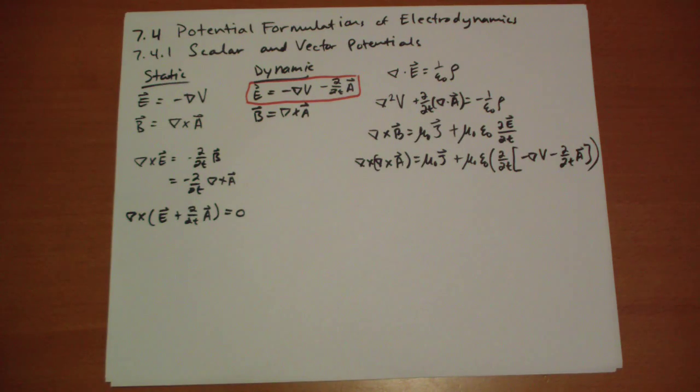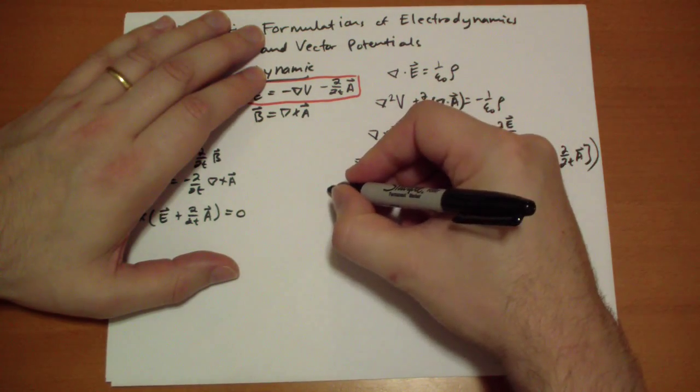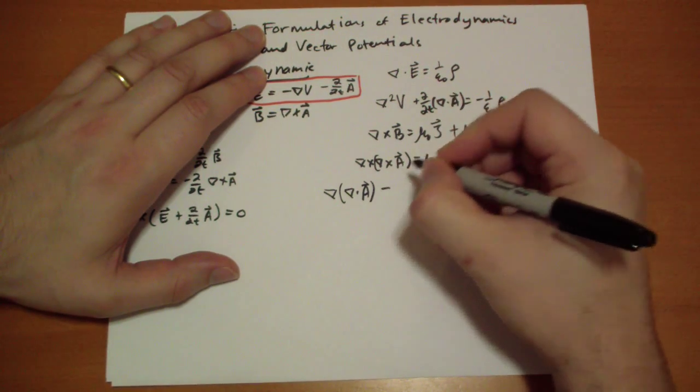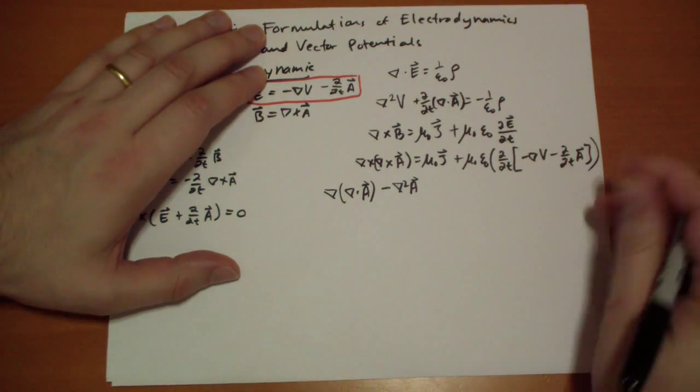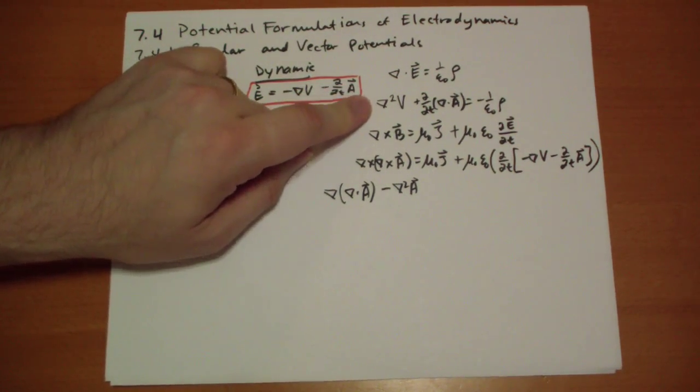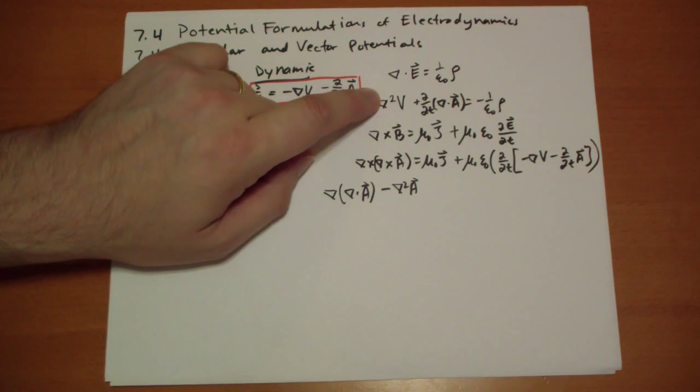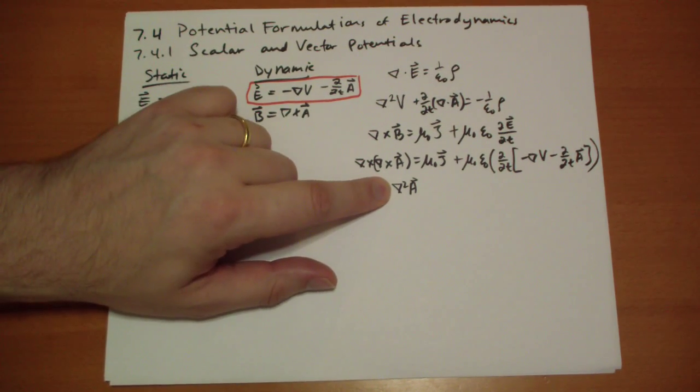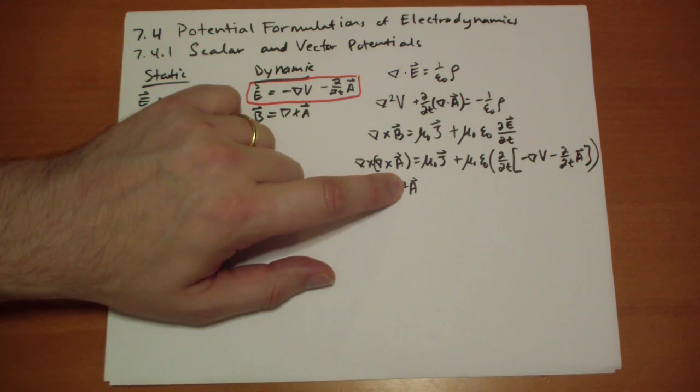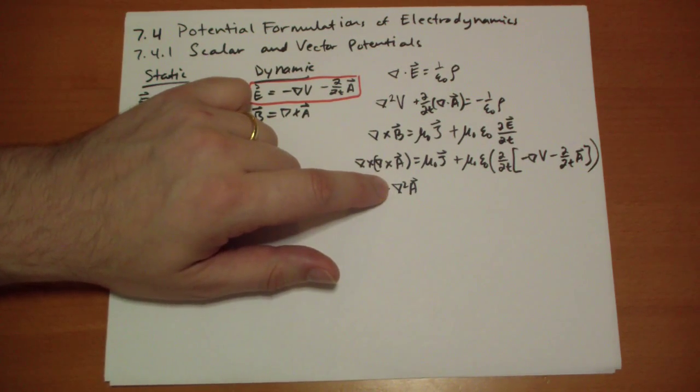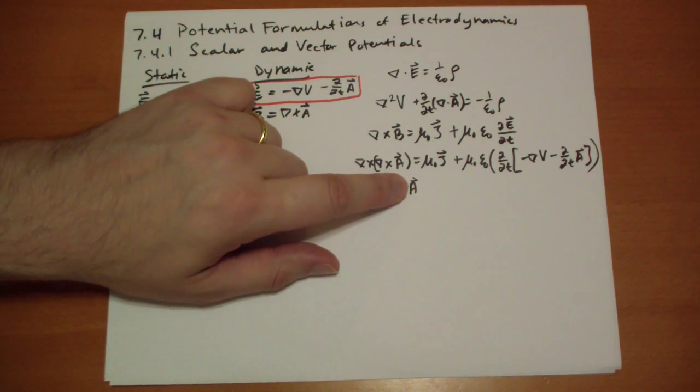Using the rule for double crosses, we get that this is actually equal to the gradient of the divergence of A, minus the Laplacian squared of the A vector. This is a different kind of Laplacian than this one. This is the scalar Laplacian, where you just take d squared by dx of V, d squared by dy of V, and d squared by dz of V. But over here, we're taking d squared by dx of the x component of A in the i-hat direction, and then d squared by dy squared of the y component in the j-hat direction, and then d squared by dz squared of the z component of A in the k-hat direction.